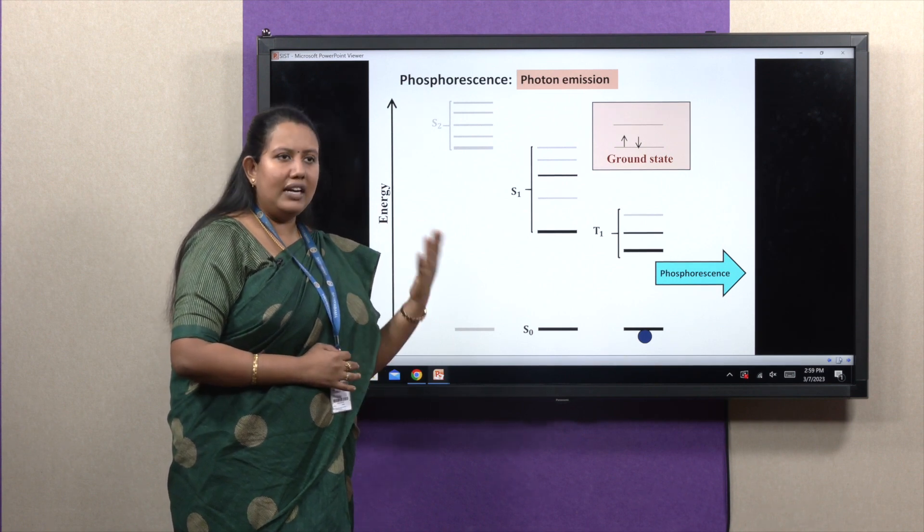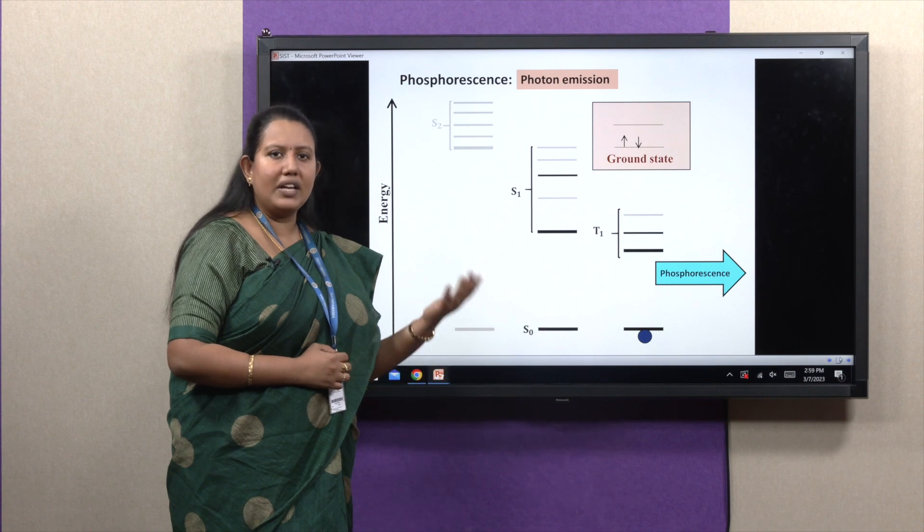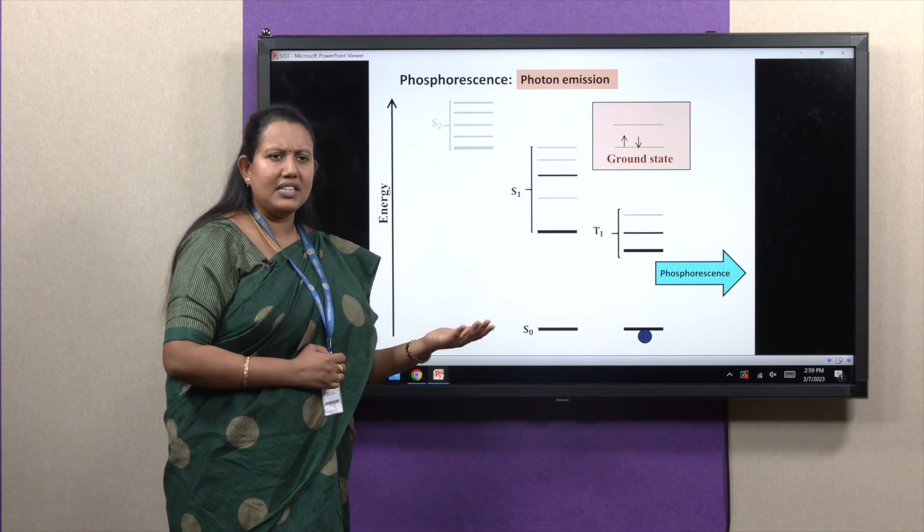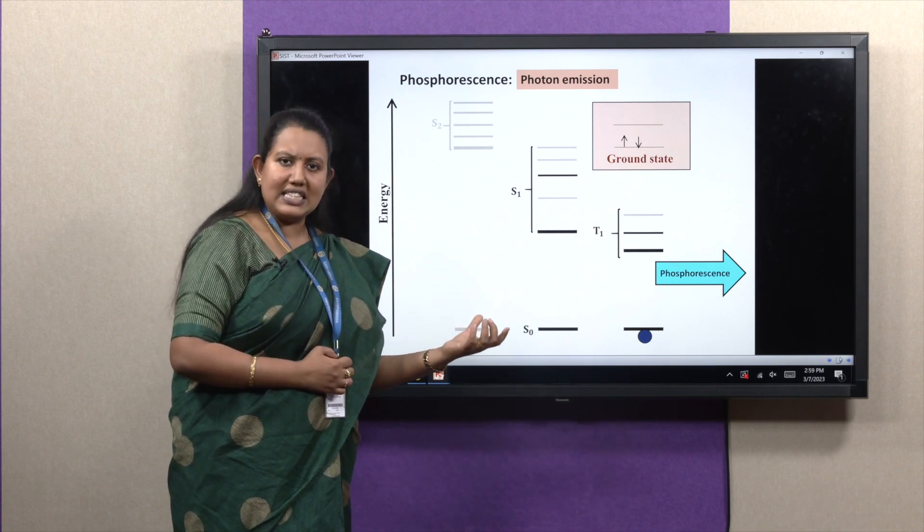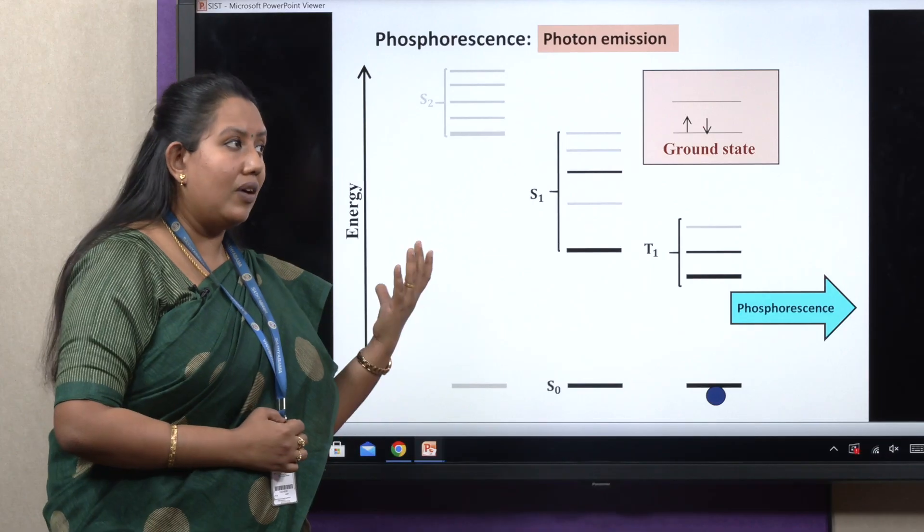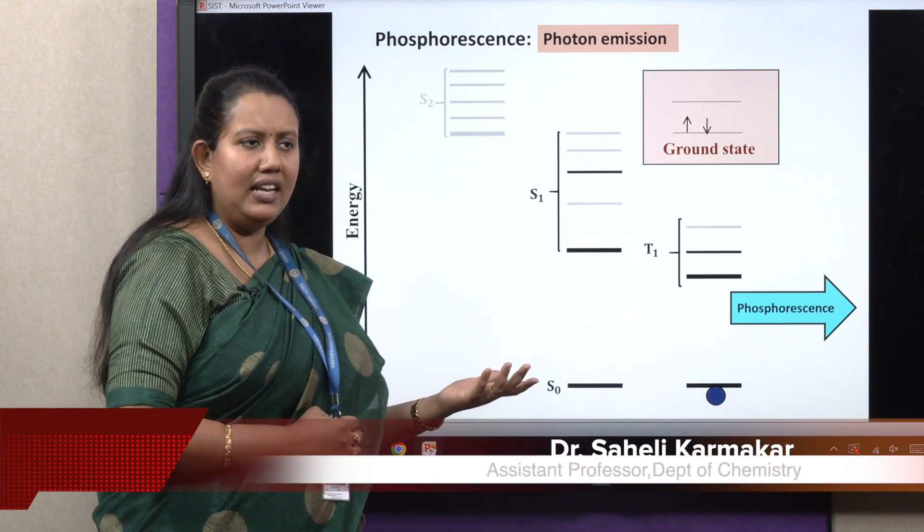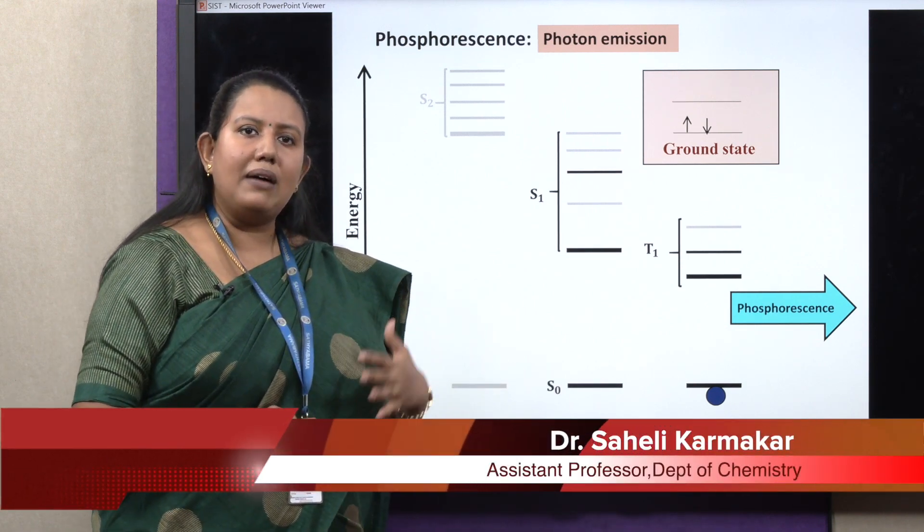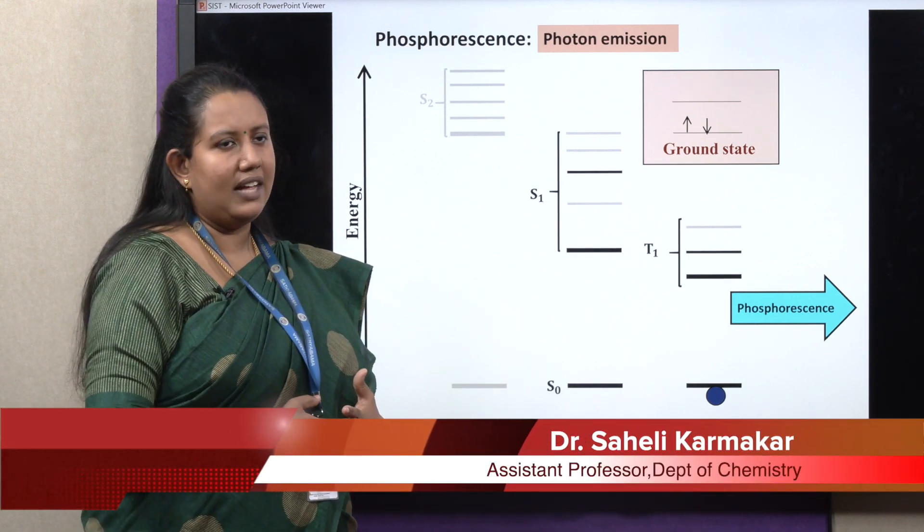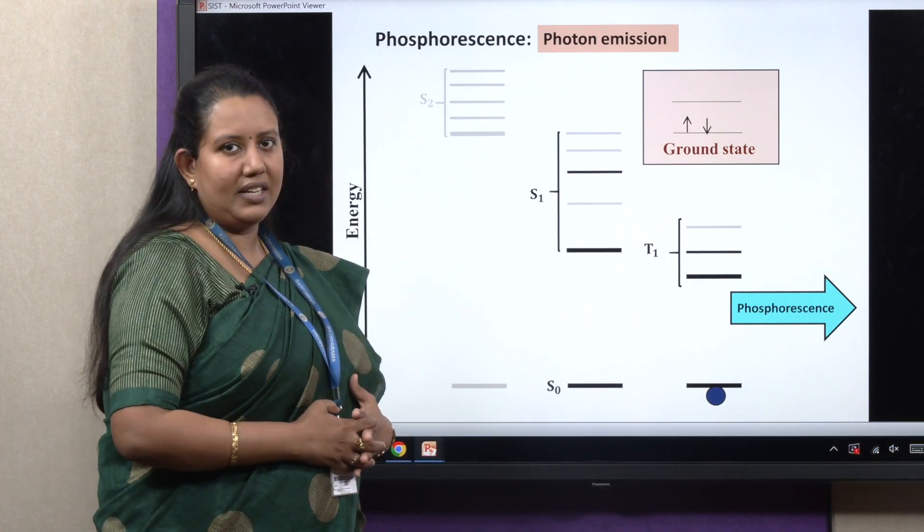This photoluminescence spectroscopy has myriad of applications in our daily life. Like, we use it for light, display, OLED, organic light emitting diodes, for various sensing applications, and one very important application of photoluminescence spectroscopy is solar cells. And other than this, in biomedical fields also, it has significant applications.